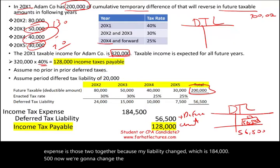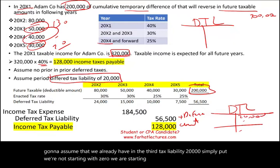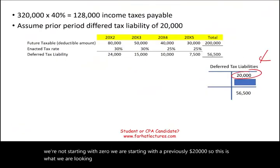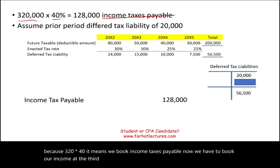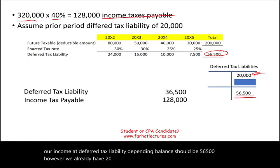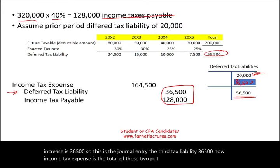Now we're going to change the example slightly with the same facts, but assume we already have a deferred tax liability of $20,000 — we're not starting from zero. Income taxes payable does not change: $320,000 × 40% = $128,000. The ending balance of the deferred tax liability should be $56,500, but since we already have $20,000, the net increase is $36,500. So we debit income tax expense and credit deferred tax liability $36,500, making the total income tax expense $164,500.